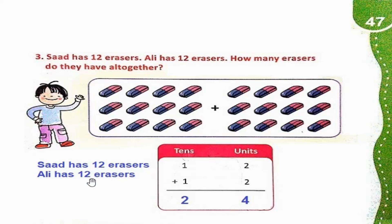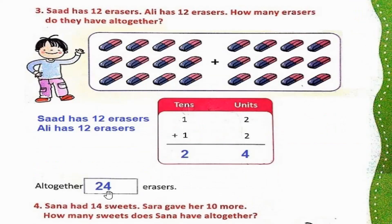12 को हम 12 से add करेंगे तो हमारे पास total आ जाएगा. So 12 plus 12: 2 plus 2 is 4, 1 plus 1 is 2. Altogether 24 erasers. आप 12 plus 12 को count करें तो ये भी 24 ही आएगा.